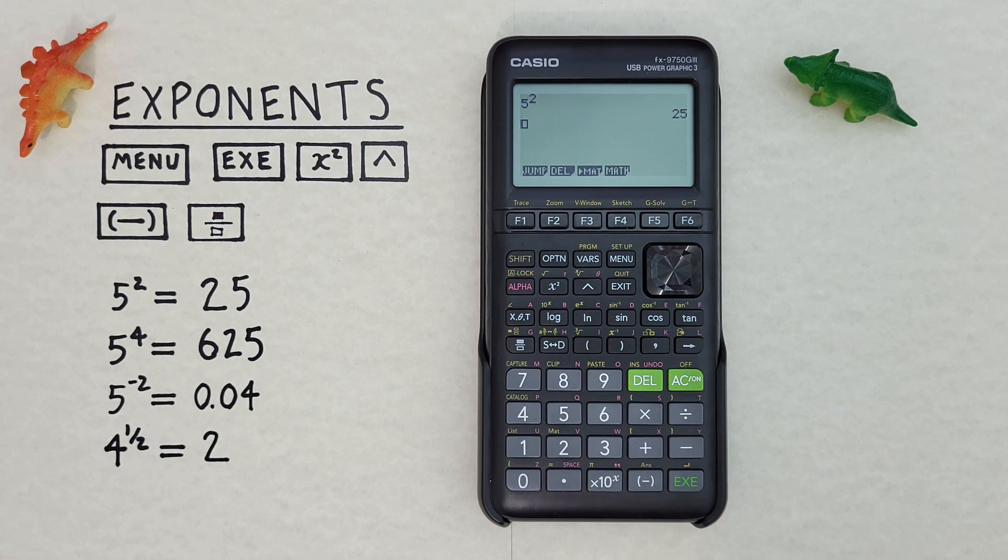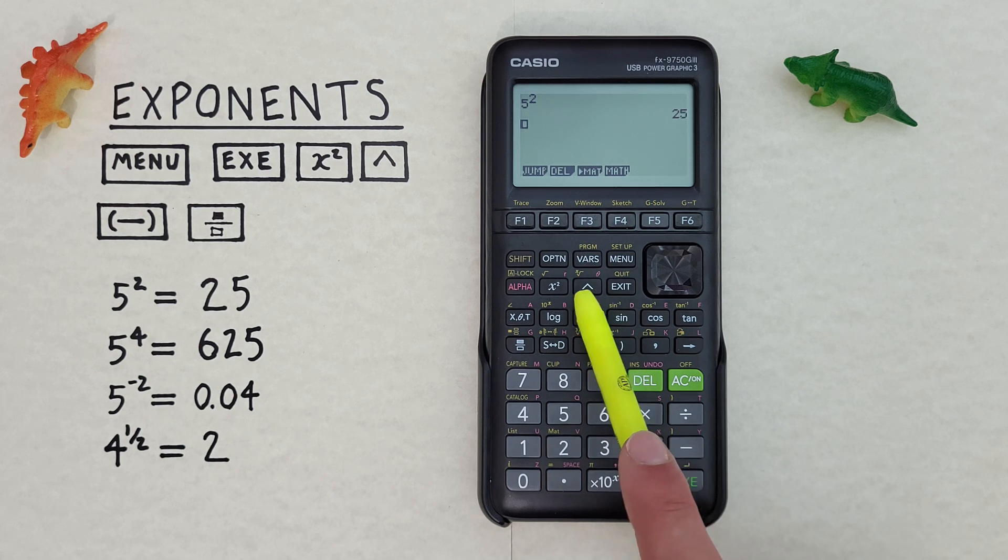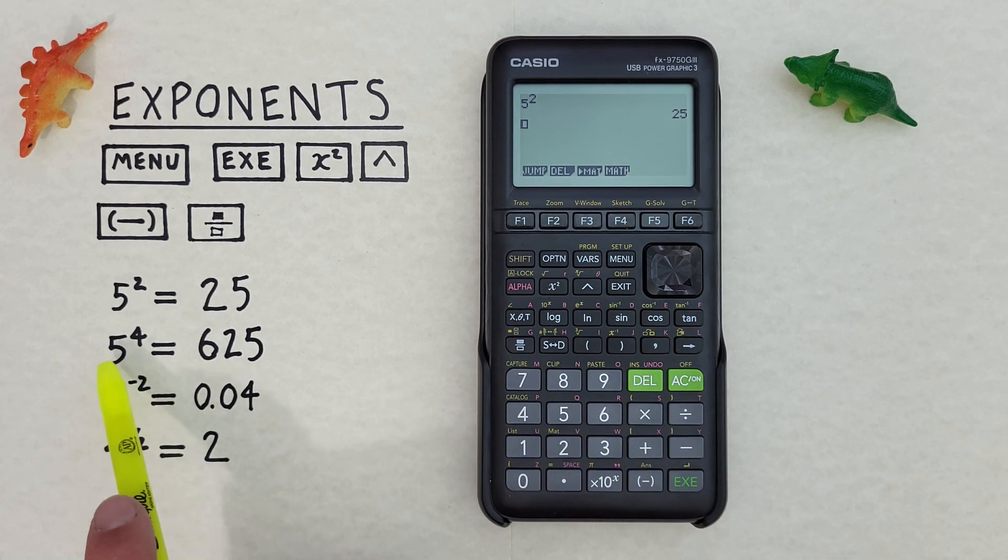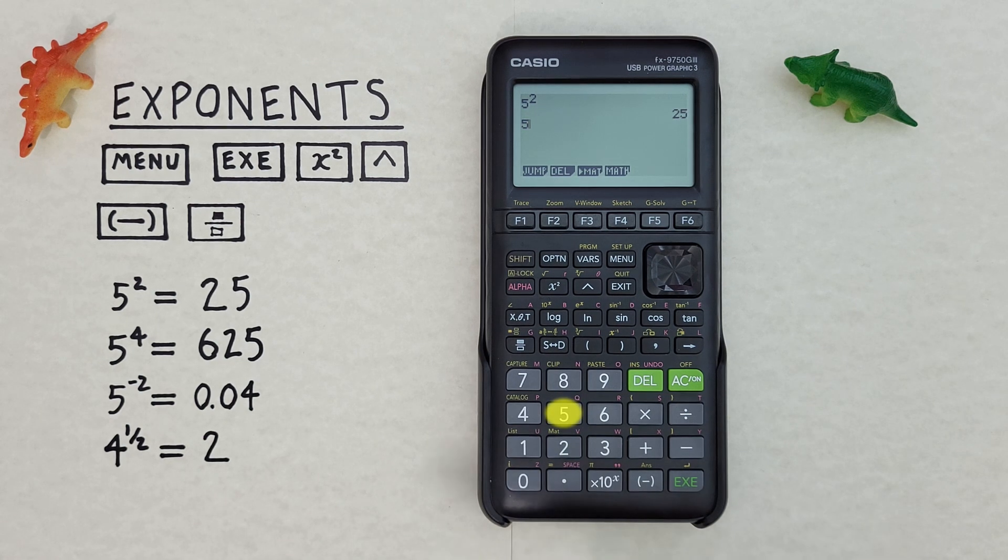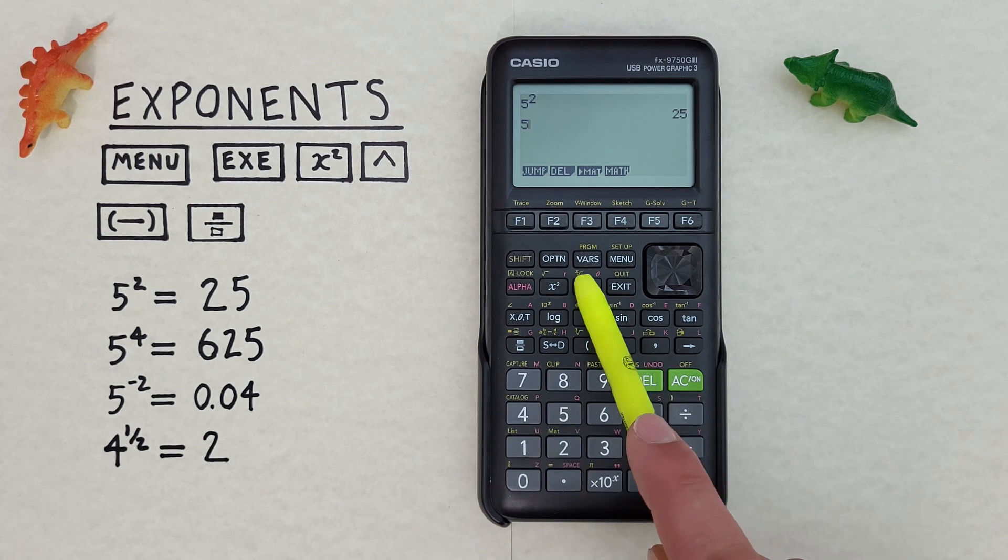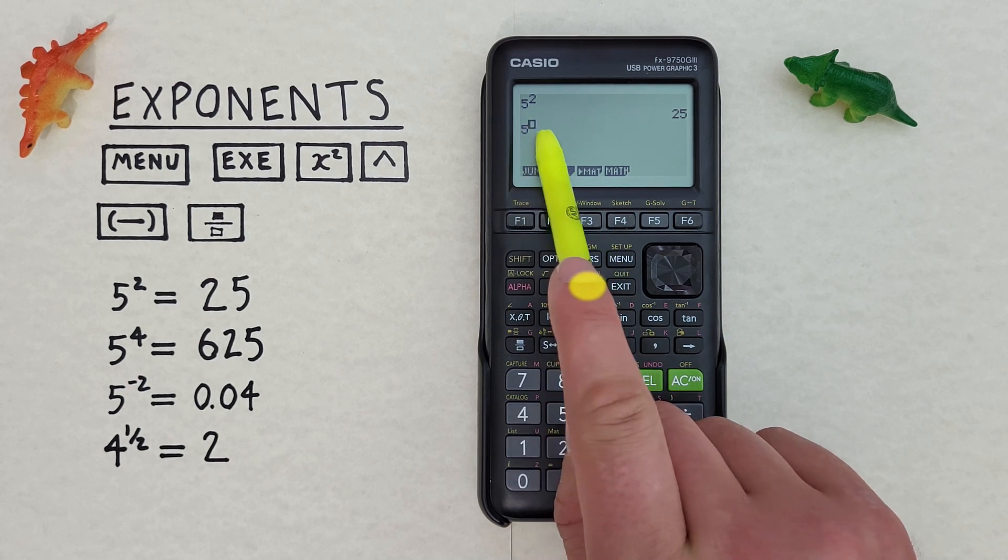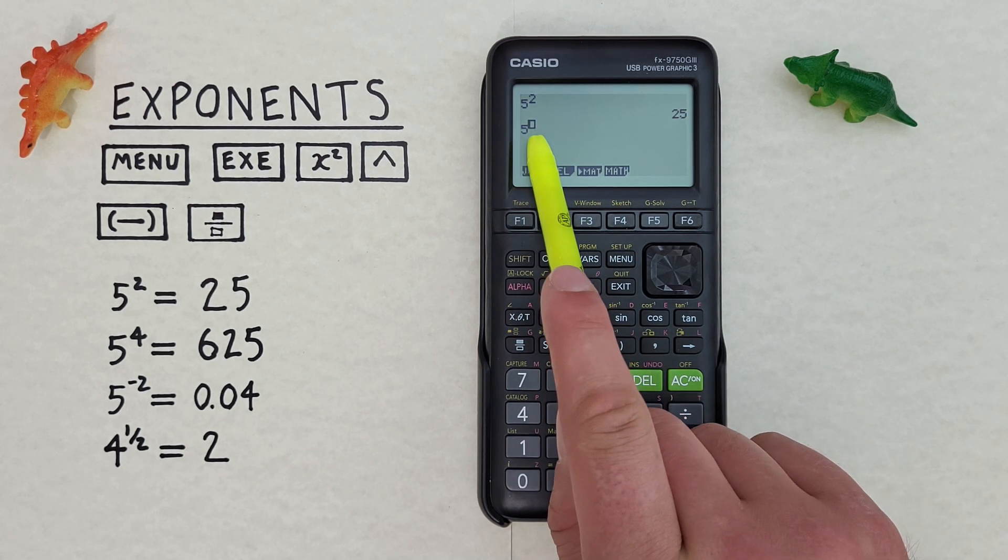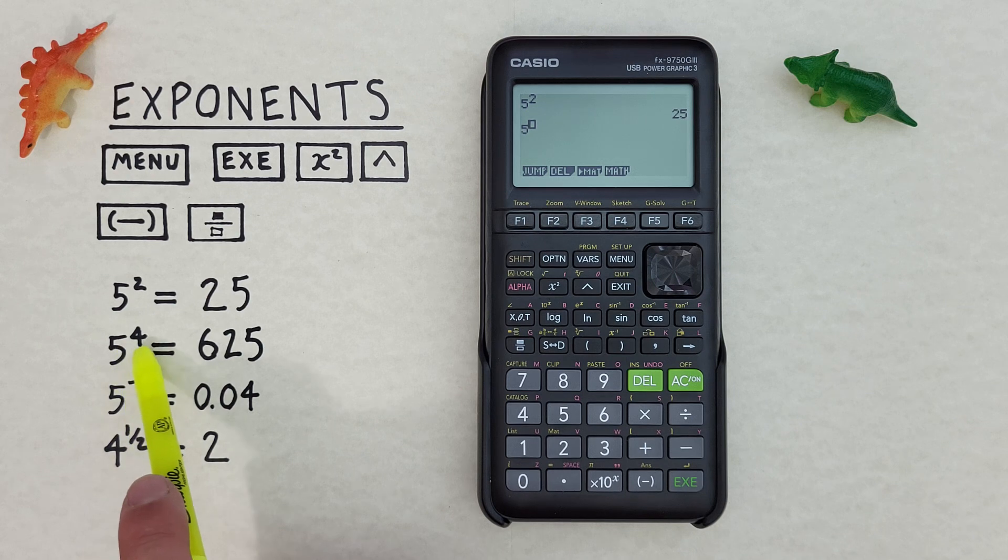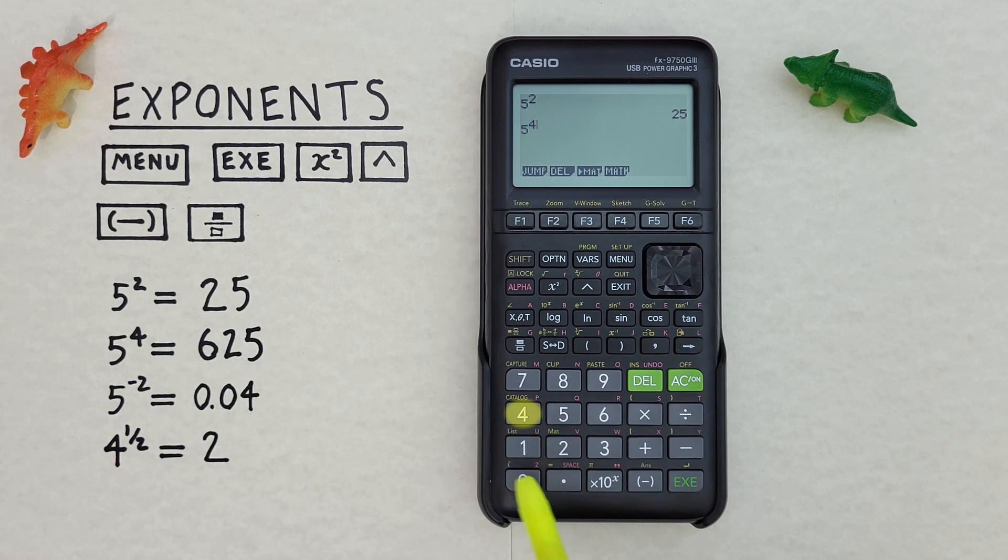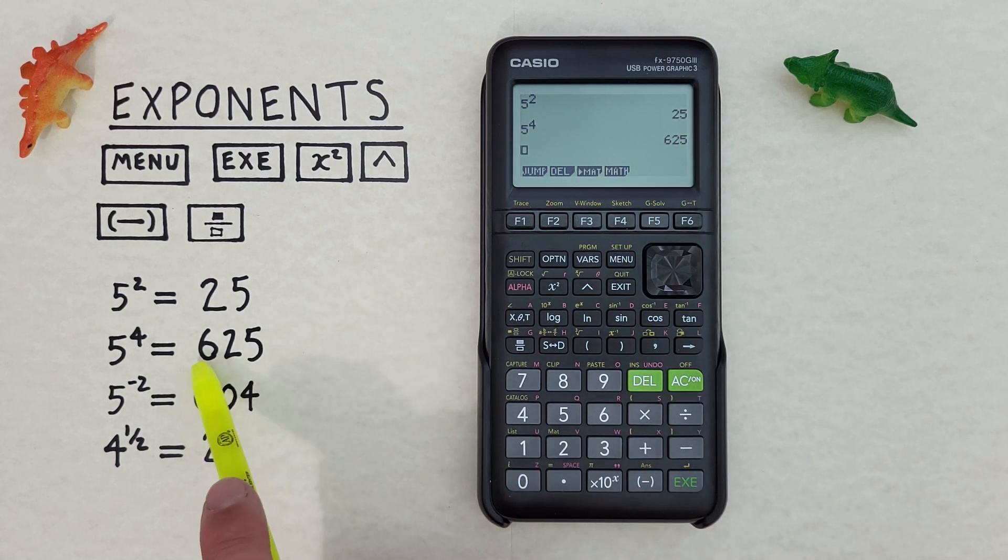What if we have an exponent that isn't a 2? Well to do that we can use the up arrow or caret key. So for example, if we had 5 to the power of 4, we would do that by first putting the 5 on the screen, and then pressing the up arrow key. And that gives us a box there where we can enter our exponent. So our exponent is 4, so we press 4, and then the exe key. And we get a result of 625, which is correct.